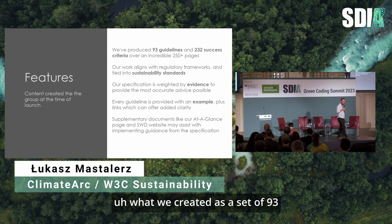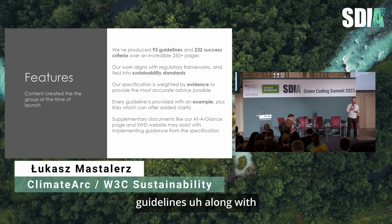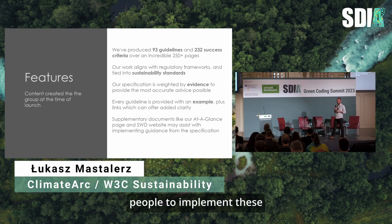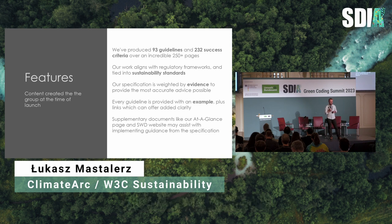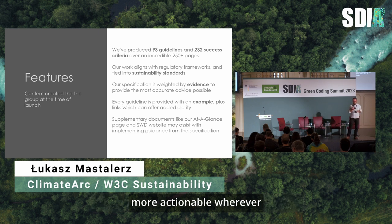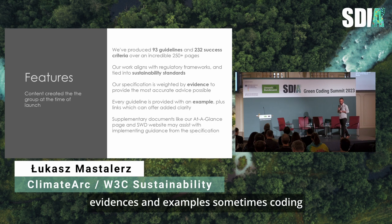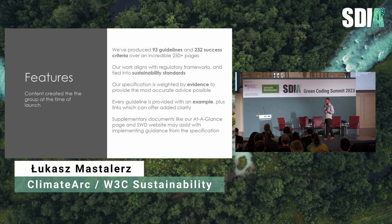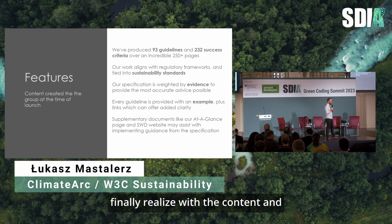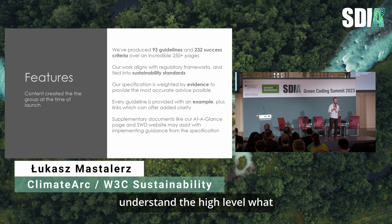What we created is a set of 93 guidelines along with more than 200 success criteria — meant to help people implement these guidelines — and the overall work is more than 250 pages. We tried to align these guidelines with existing regulatory frameworks and sustainability standards to make them more actionable. Wherever possible, we've been adding evidence and examples, sometimes including coding examples.